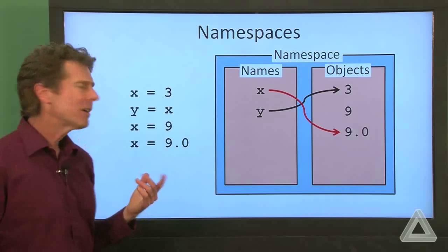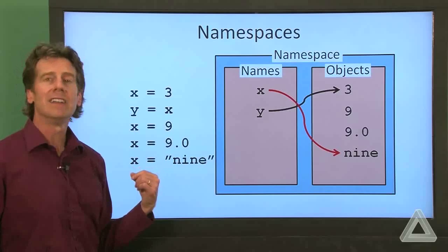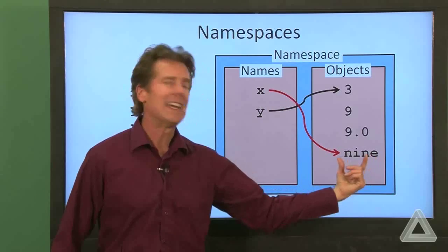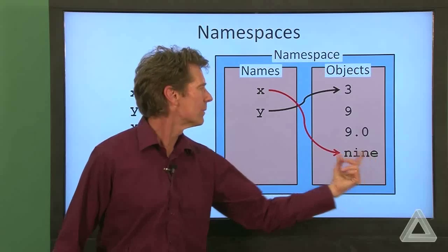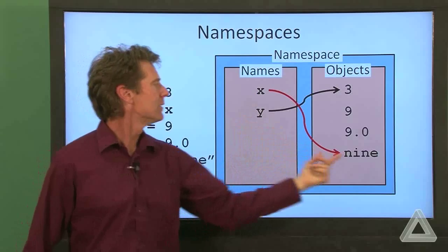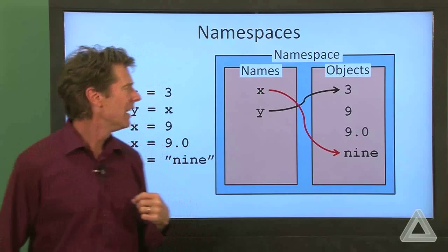And then how about if we say x is equal to the string nine? Well, now in memory, these characters, n-i-n-e, will be stored somewhere. And the namespace will give the mapping from x to this string of characters.